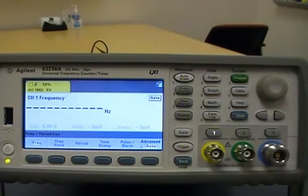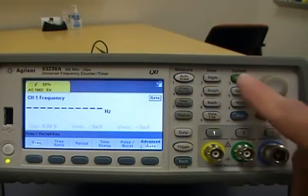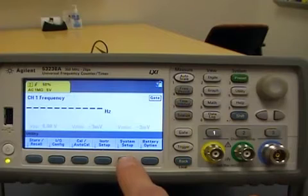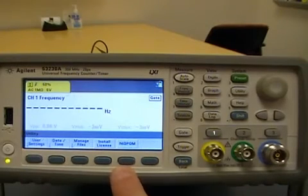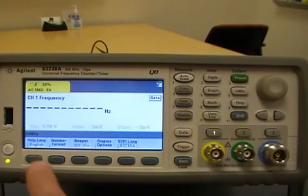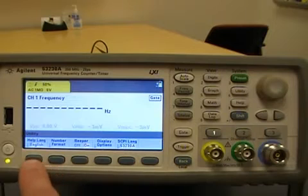Instrument help for the 53200A series counters is available in six languages. To select a help language, begin by pressing the utility key, followed by the system setup soft key, the user settings key, followed by help language.